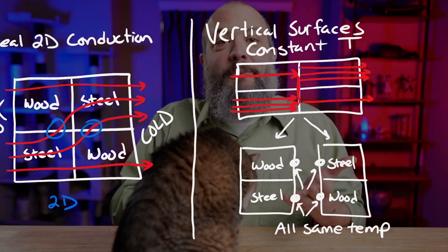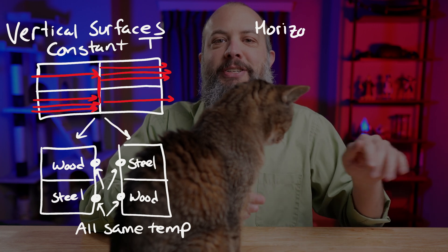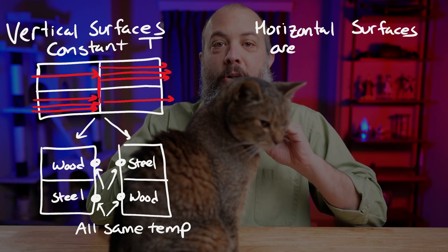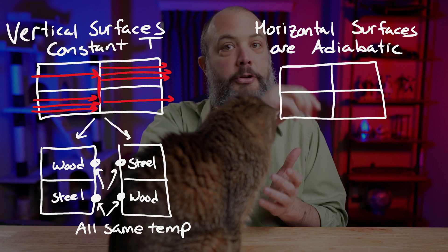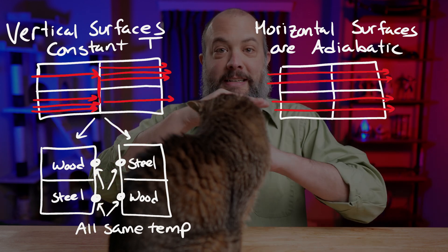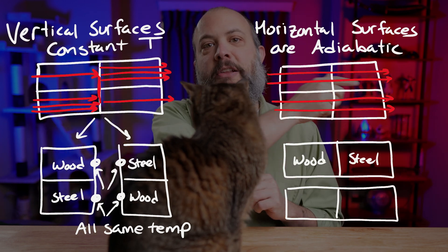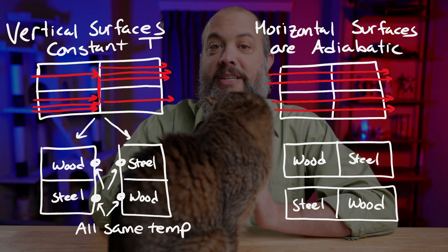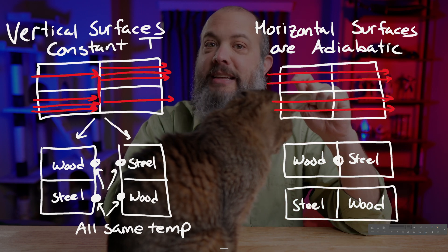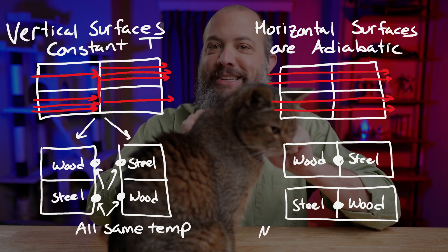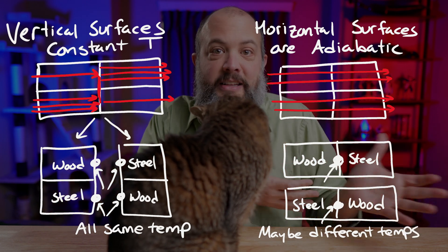The other way to one-dimensionalize composite walls is to slice it in half horizontally. We describe this as horizontal surfaces being adiabatic — the path energy takes as it cuts through the wall is always strictly horizontal, no vertical jumping at all. This means taking each horizontal section separately: once energy starts down one path, it keeps going horizontally. At vertical intersections, like where steel and wood meet, the top and bottom halves might not be at the same temperature. It's just a different assumption, not more or less valid than the other.